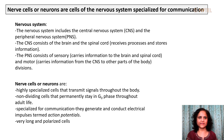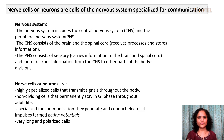The nervous system includes the central nervous system and the peripheral nervous system. The central nervous system consists of the brain and the spinal cord, and it receives, processes, and stores information. The peripheral nervous system consists of sensory divisions, which carry information to the brain and spinal cord, and motor divisions.